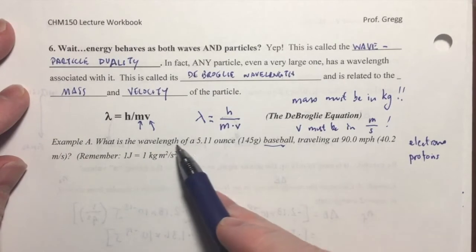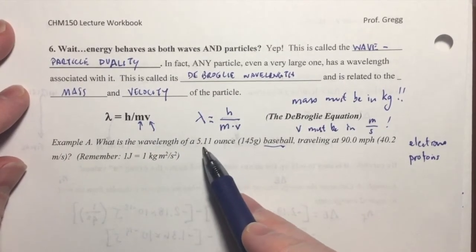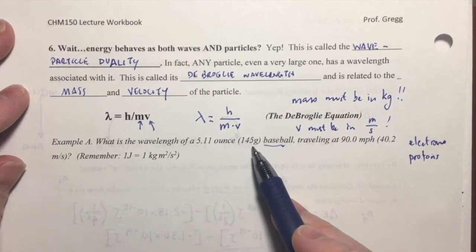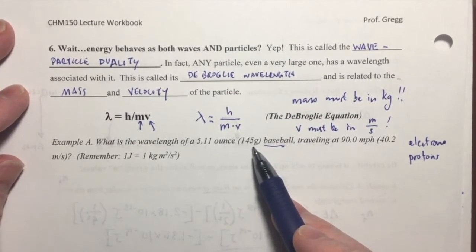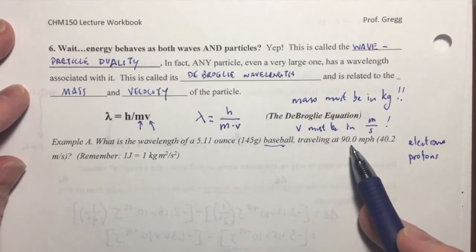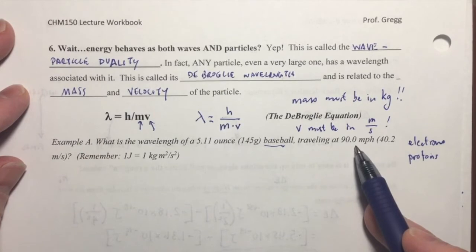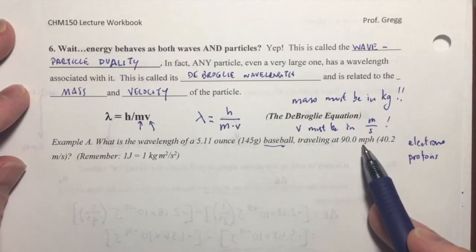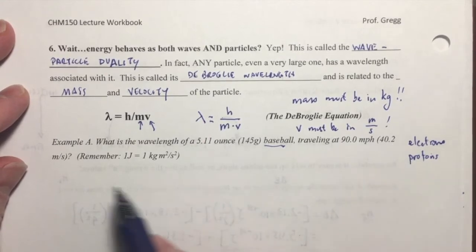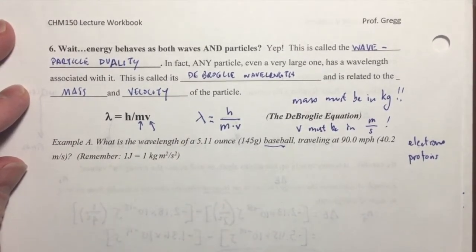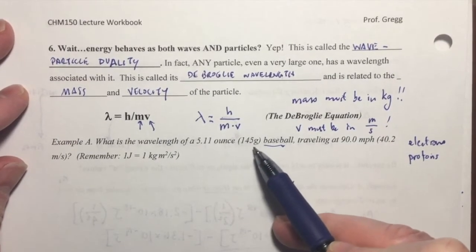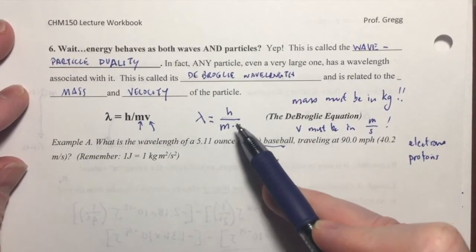But in this case, I'm going to do it for a baseball. Okay? So what is the wavelength of a 5.11 ounce, that's a regulation baseball, and I'm giving you the metric equivalent in grams of that baseball, traveling at 90.0 miles per hour. That's a decent fastball. 90.0 miles per hour, and then I went ahead and I converted it to 40.2 meters per second. So I've done some of the conversions for you already. You'll need to convert this grams to kilograms before you can plug it into this equation.